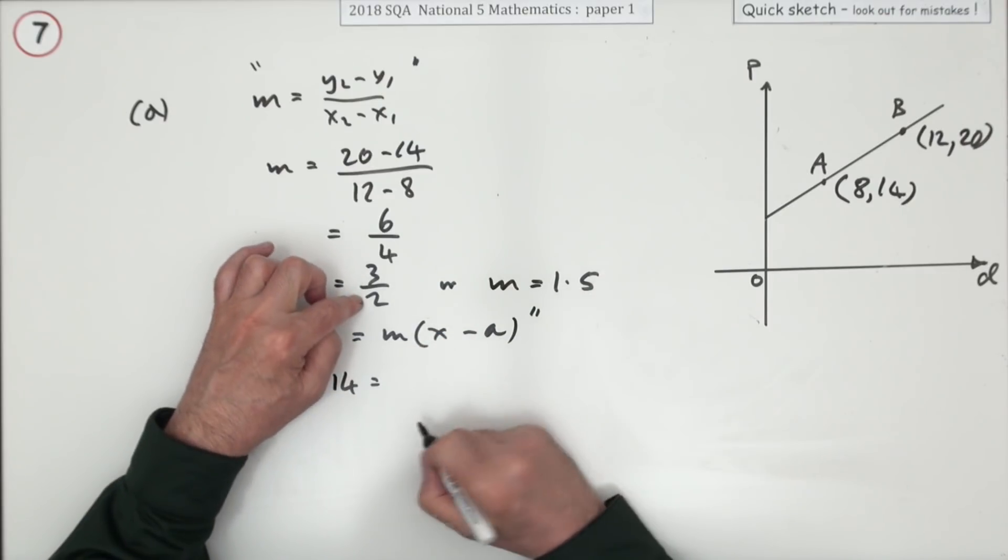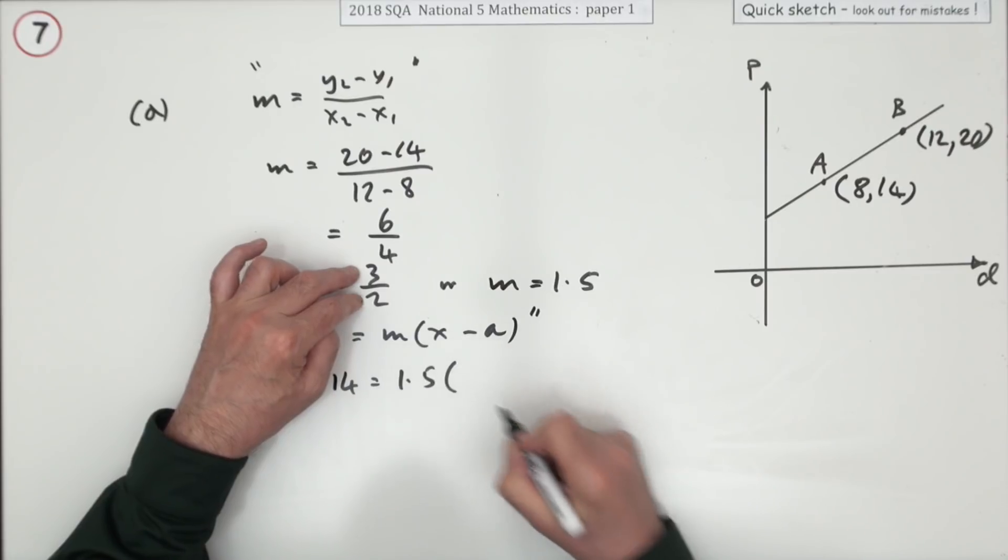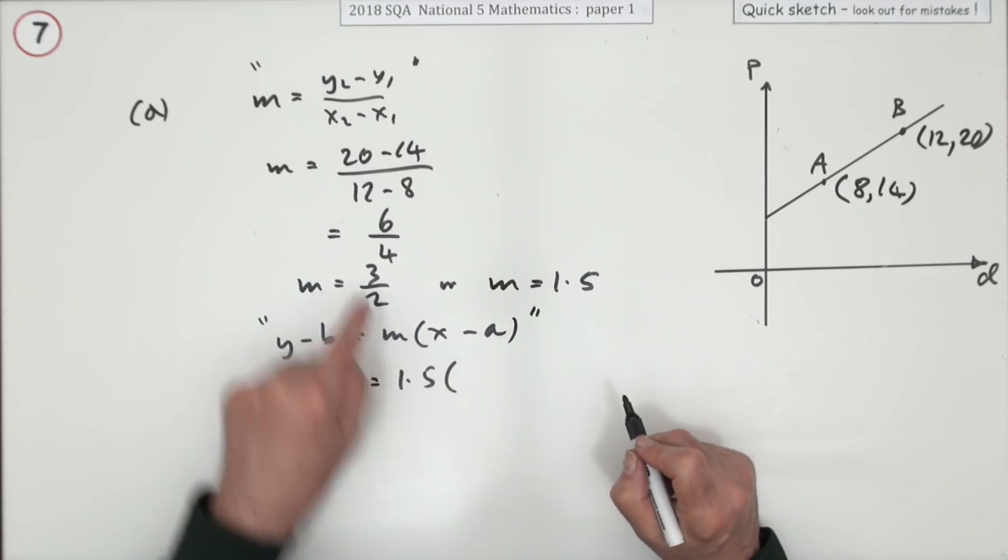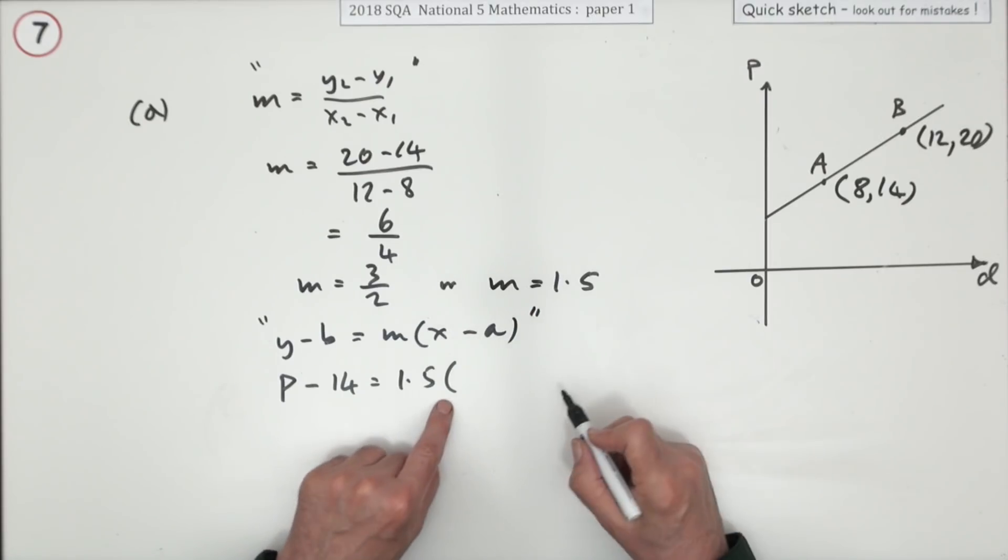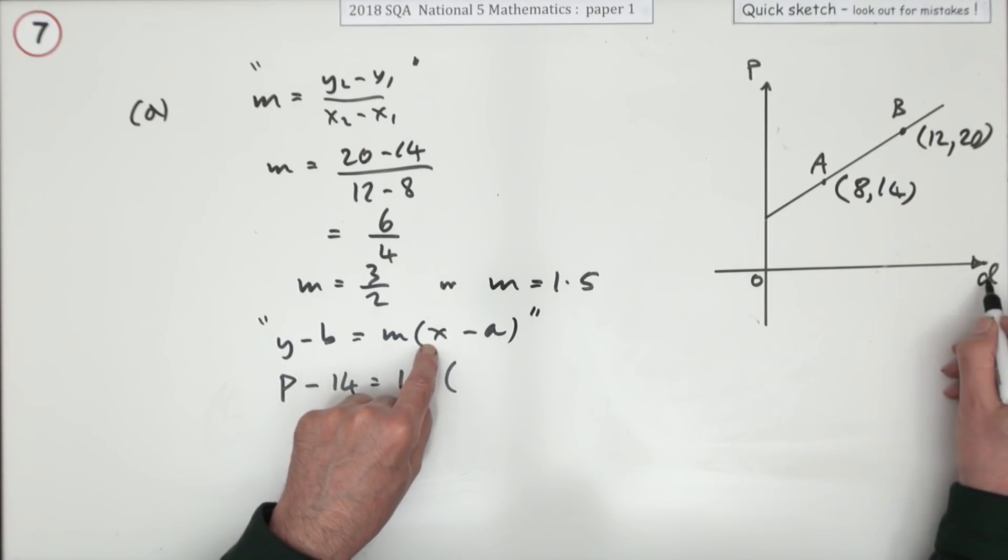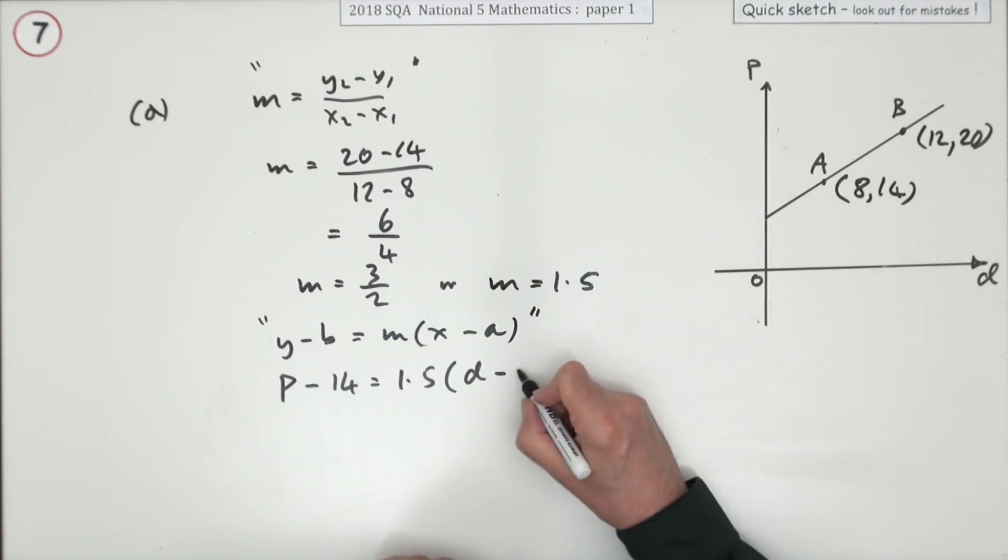m will be one of those. Maybe I'll go for the 1.5 since it's just money, you can talk about 3 upon 2 pounds and things like that. x is the name along this axis, that's a d. a is the first coordinate, that's the 8.